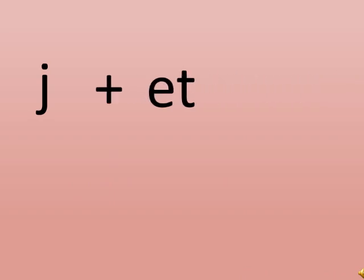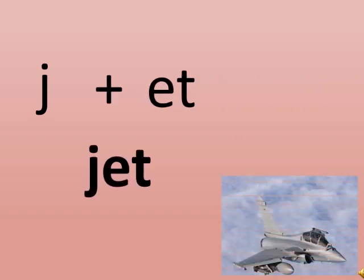The next word — can you see J? J plus ET. J plus ET is 'jet'. J says 'j', J plus ET is 'jet'.